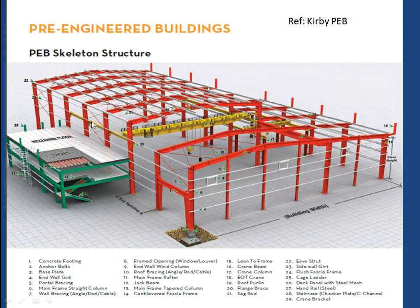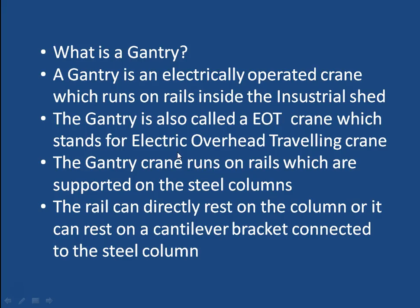These types of cranes are called gantry cranes or EOTs. They run on rails which are mounted on the columns of the industrial shed structure. What we are interested in is how this rail is constructed and how it is supported on the columns. A gantry is an electrically operated crane which runs on rails inside the industrial shed. The gantry is also called EOT, which means electric overhead traveling crane.